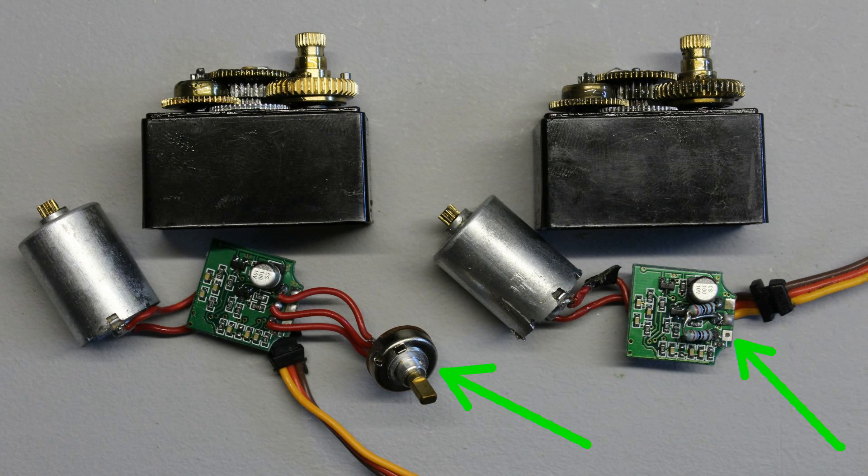After that, the potentiometer has to be removed and replaced by a voltage divider composed of two constant resistors.